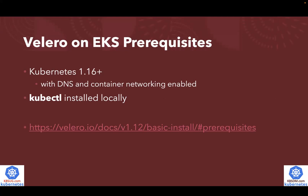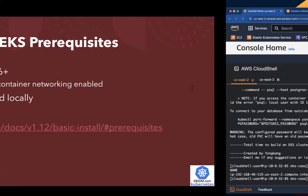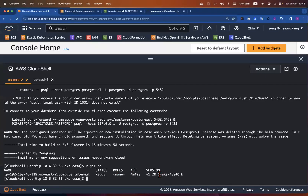You need Kubernetes 1.16 or plus, and also have kubectl installed locally. For my demo, I will use AWS Cloud Shell, where I already have kubectl installed as part of my preparation. Kubernetes right now is running 1.28. Let's just verify. I do have a one-node cluster running 1.28, created about five minutes ago using my automation. This time it actually ran quite fast — just under 14 minutes to create a one-node EKS cluster.